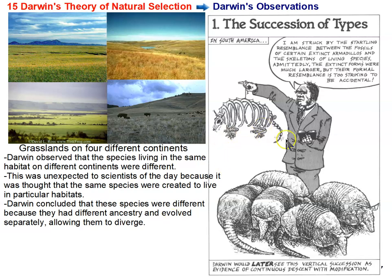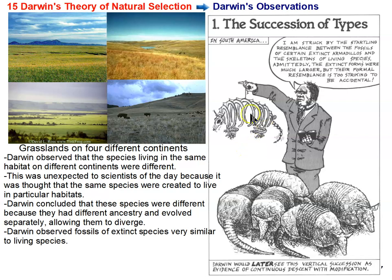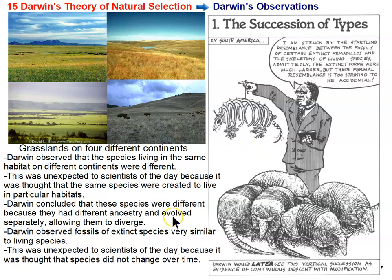The other thing that he observed were fossils. He found fossils as he was sailing around the world, and one particular fossil that he found were armadillos. He found that the fossil skeletons of armadillos were much larger than the armadillos living today, showing that armadillos had changed over time. This was unexpected, because it was thought that species didn't change over time — that species were created, and once created, they stayed the same forever.